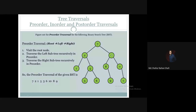Then we go to the right subtree of 10 which has root 12, and then to the right subtree of 12 where we visit 15 and print it. So this is the complete pre-order traversal for the given binary search tree.